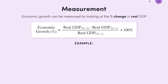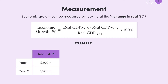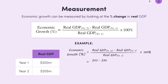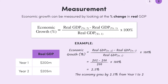For example, let's say that for a certain economy, real GDP in year 1 was $200 million, and real GDP in year 2 was $205 million. To find the rate of economic growth, we subtract 200 from 205, divide by 200, and multiply by 100. This gives us 2.5, meaning that the economy grew by 2.5% from year 1 to year 2.